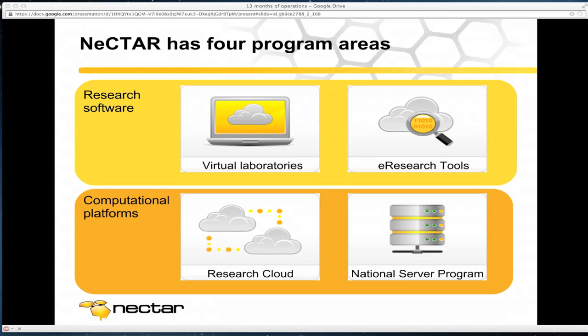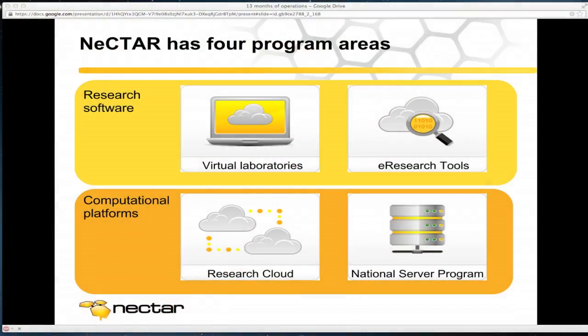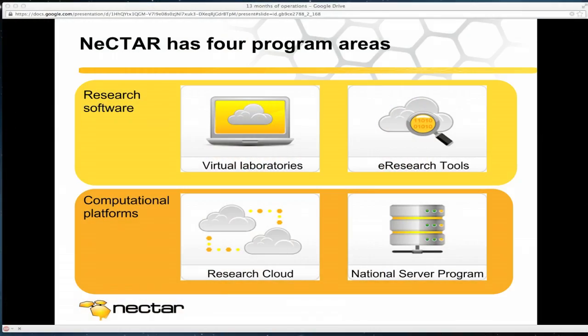What is Nectar exactly? It's actually an acronym: the National E-Research Collaboration Tools and Resources Project. We love our honey-style theme. Essentially, it's a $47 million initiative out of a bucket of money from the Australian government called Super Science, designed to enhance research collaboration through the creation of e-research infrastructure. It's divided into four different programs — infrastructure-style programs — and the research cloud is hopefully what we're here to talk about today. We've also got the national service program, more like your traditional enterprise hosting environment, used for core services like AAA.